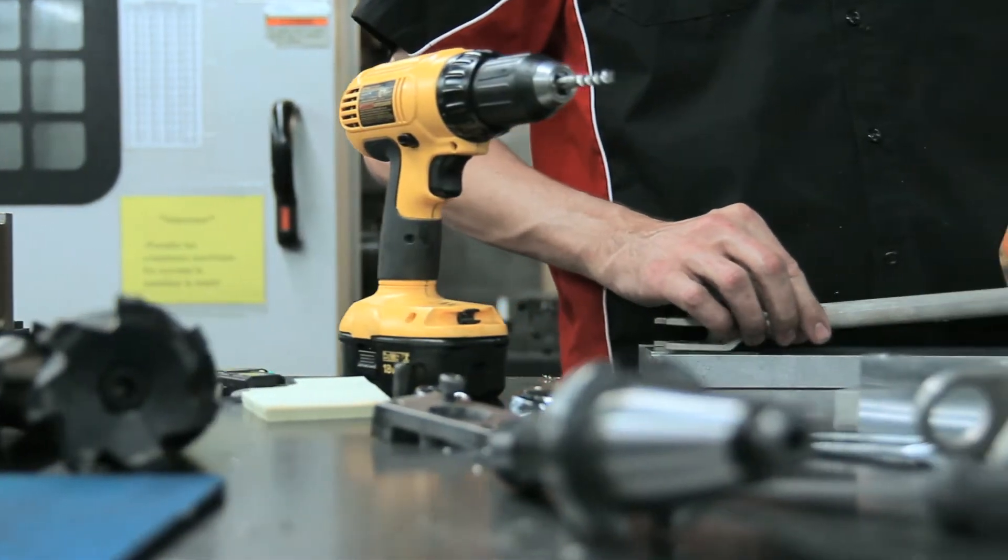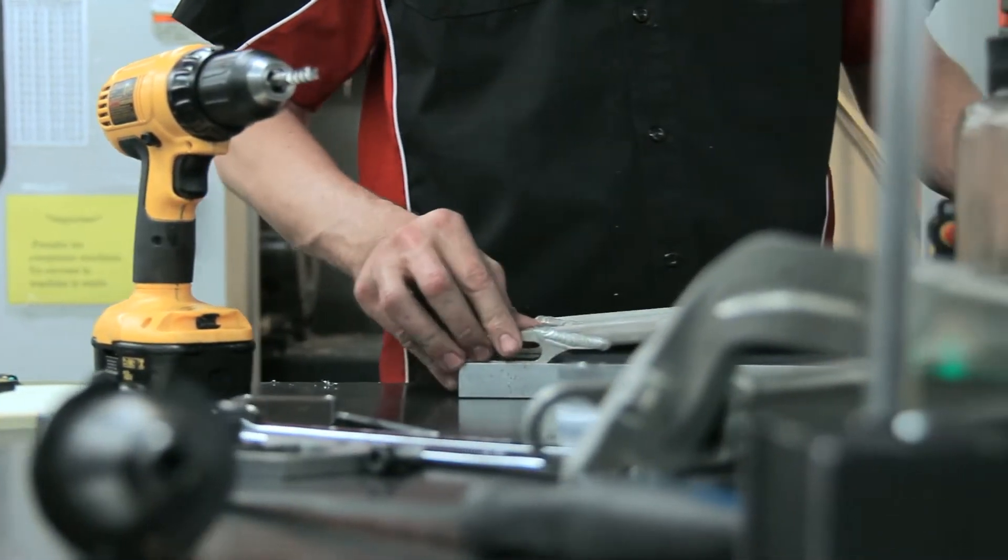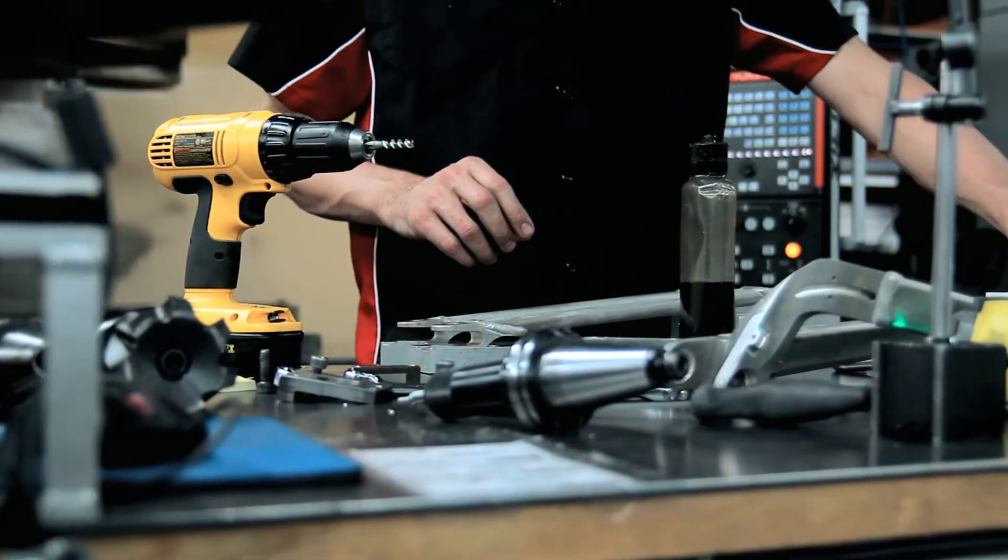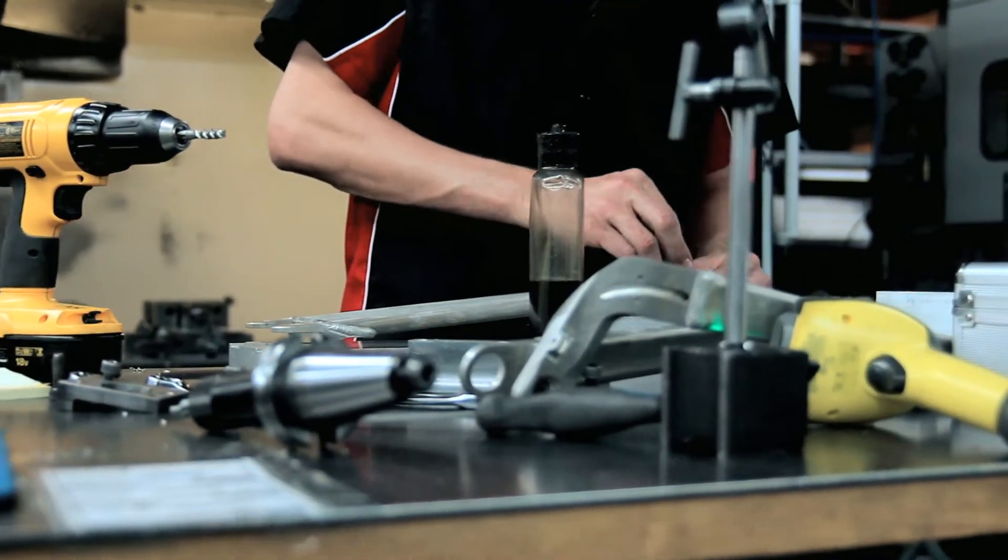Even after all the welding and heat treating is complete, the frame goes back to the CNC machine for one last precision cut on all the pivots. This ensures that the suspension will work smoothly with minimal friction due to misalignment.